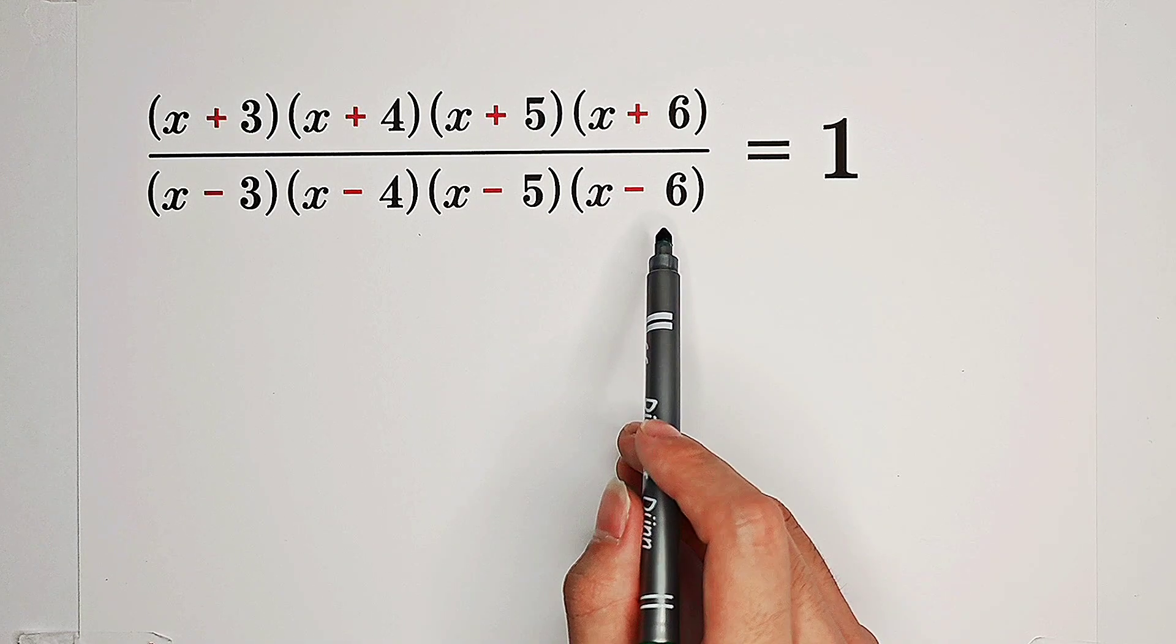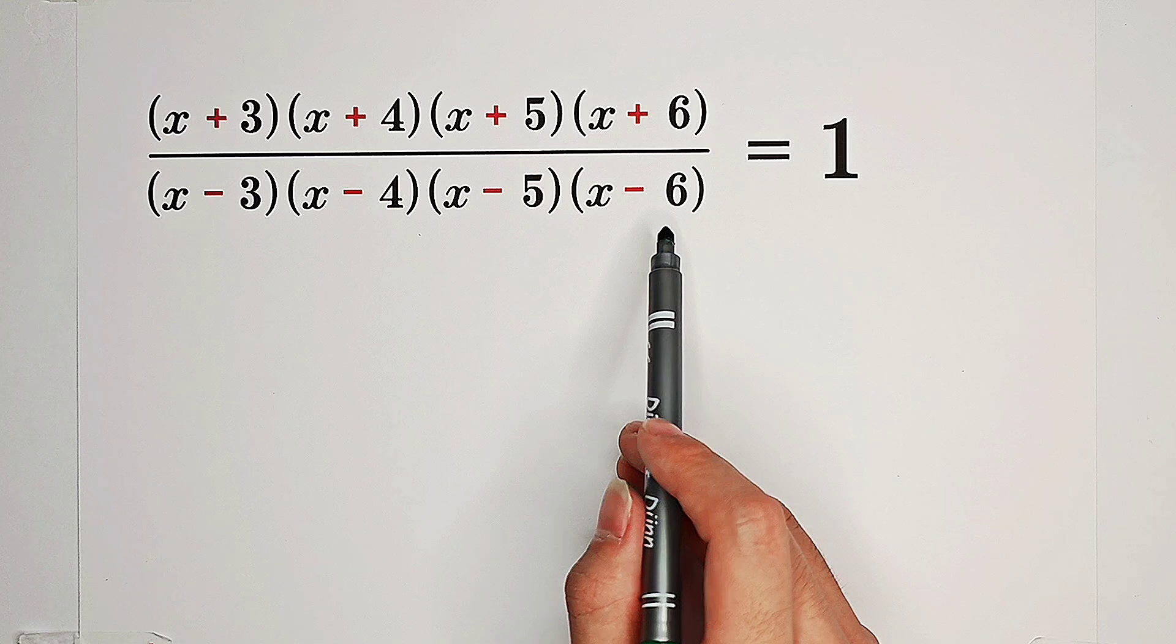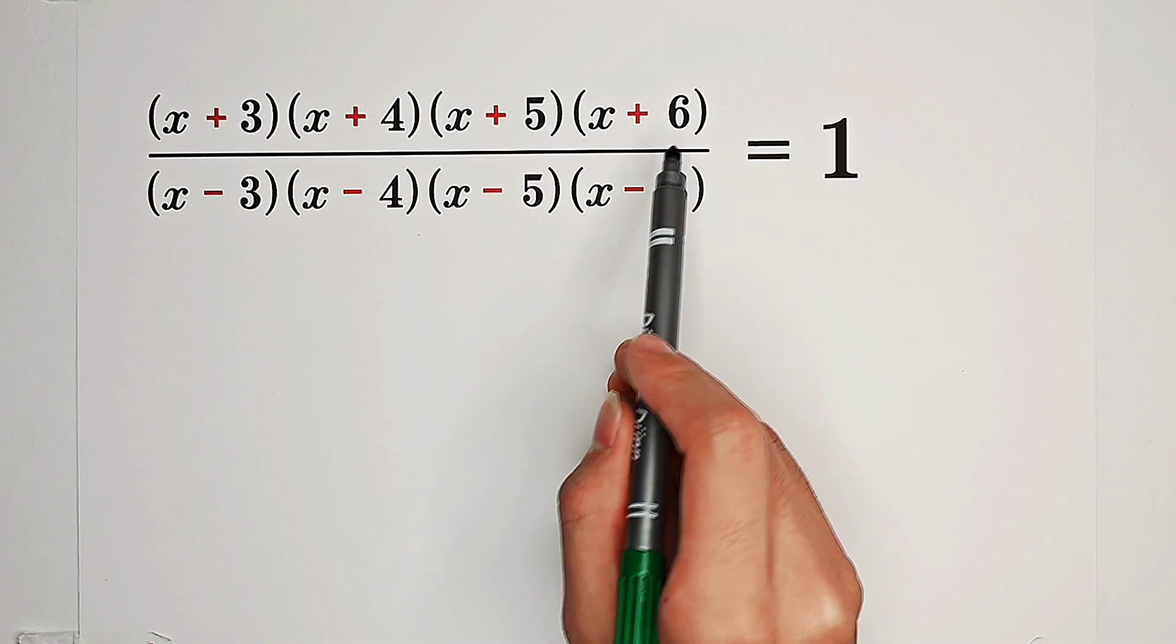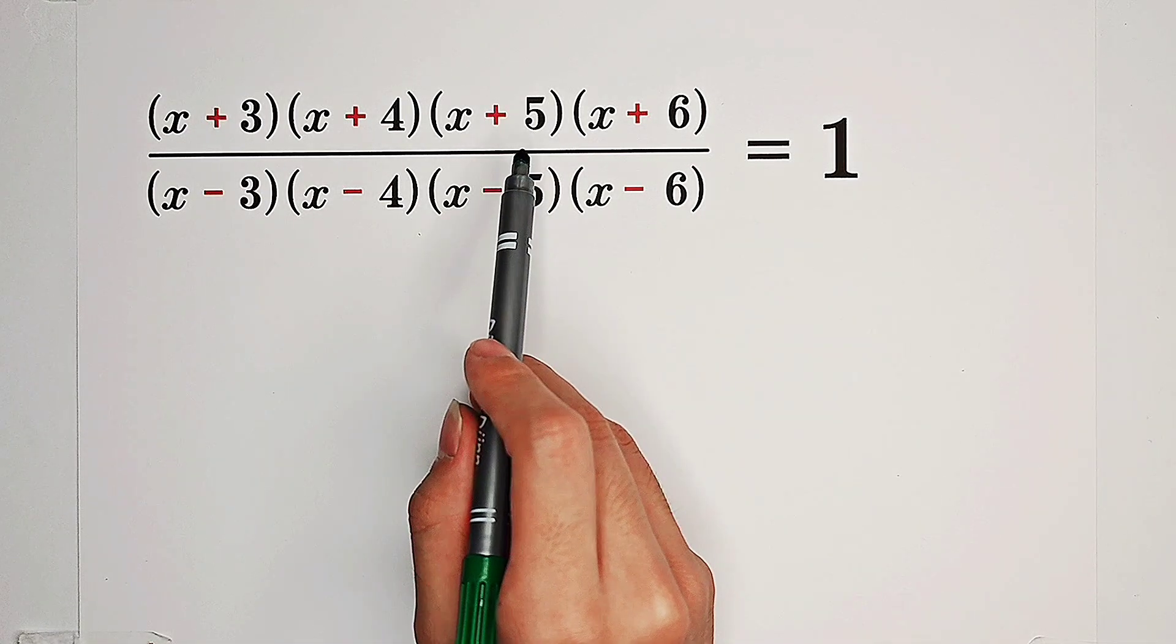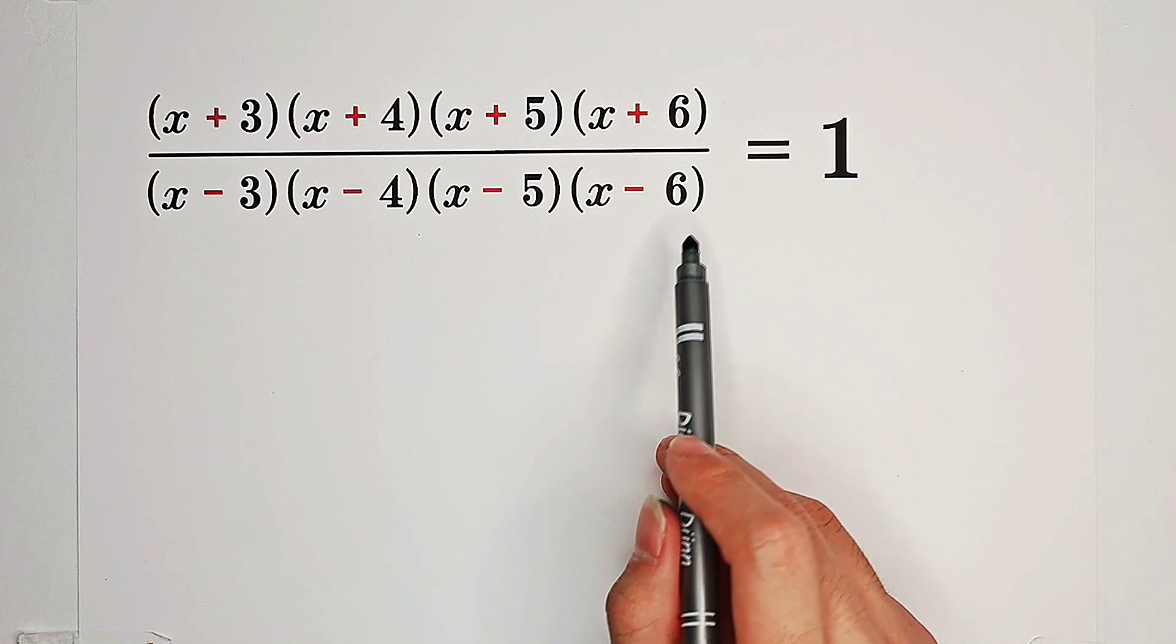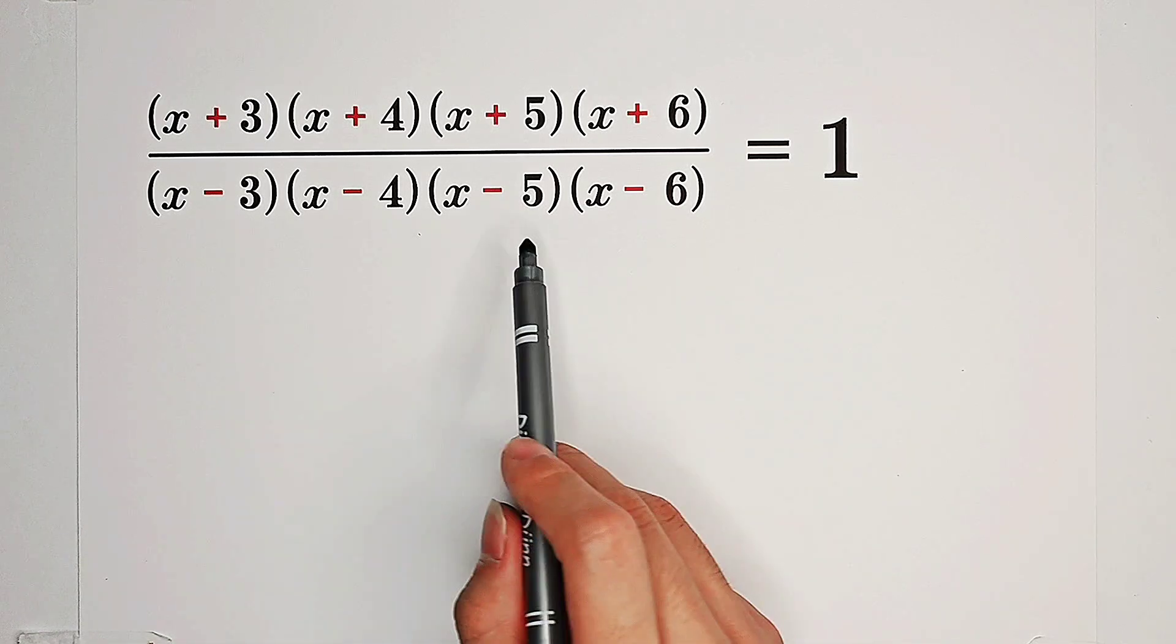And now, in our first step, you have to find out that 3 plus 6 equals 4 plus 5. Negative 3 plus negative 6 equals negative 4 plus negative 5.